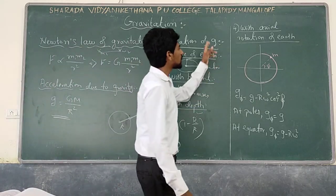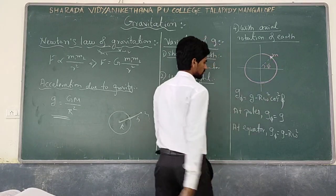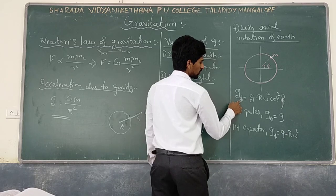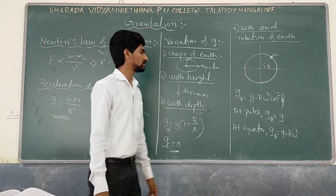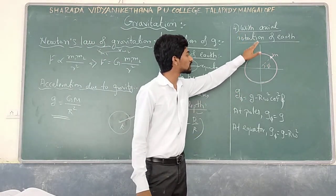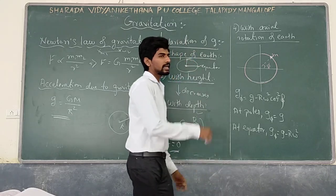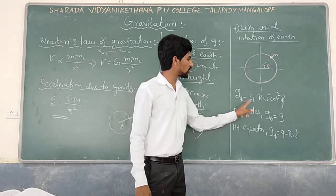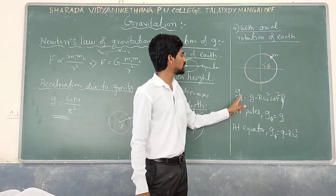With the axial rotation of Earth, how will g vary? Consider a mass at latitude φ. At this point, the acceleration due to gravity is given by g_φ equals g minus R omega square cos squared φ. So g is decreased because of axial rotation. At the poles, φ becomes 90 degrees, so cos squared φ becomes 0, and g_φ equals g. At the poles, there is no effect of rotation on g.